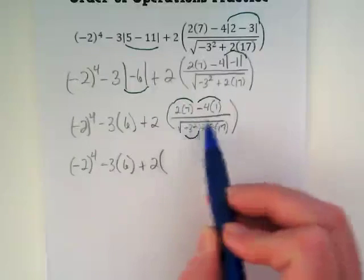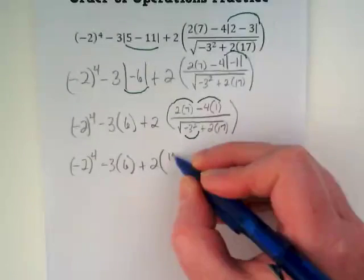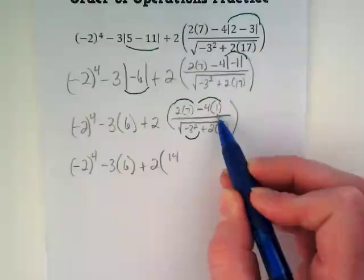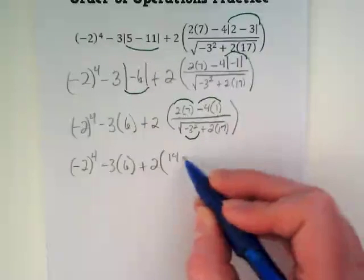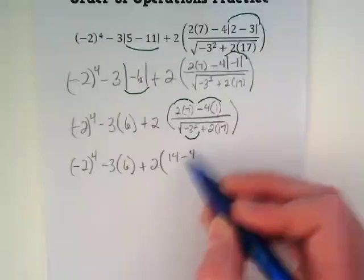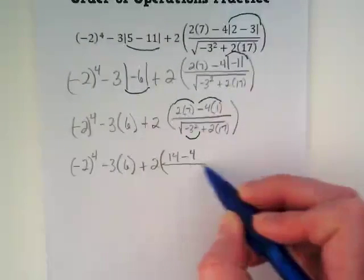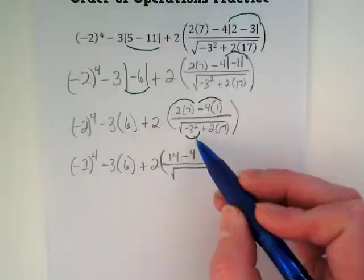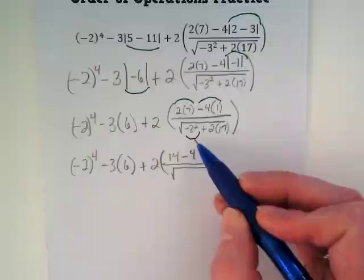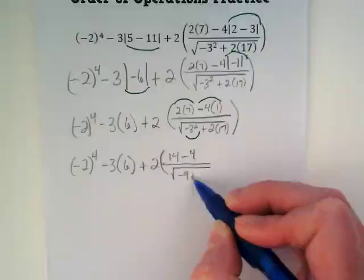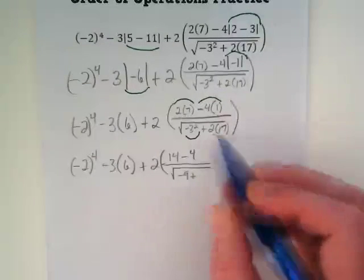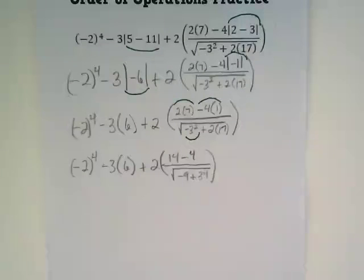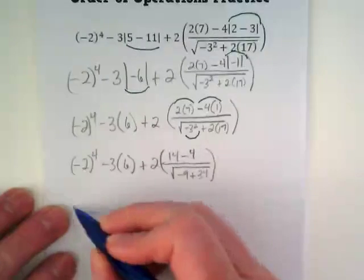Plus the 2 times. I am going to start simplifying what is in the numerator in here. What is 2 times 7? And then -4 times positive 1? So this becomes, instead of 2 times 7 minus 4 times 1, we get 14 minus 4. And inside the radical, I am going to do this one first. What is -3 squared? Think back to yesterday. It is a -9. Because that negative is not captured inside the parentheses. Remember that from yesterday? So we have a -9 plus, let's go ahead and do 2 times 17. What is 2 times 17? 34. Okay. That grouping symbol is getting less confusing looking. We are starting to get things simplified.